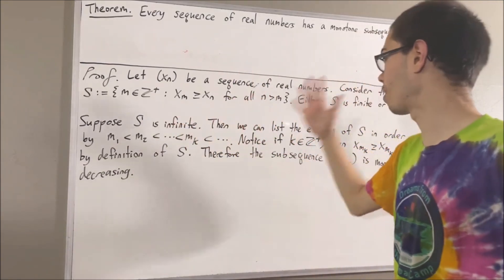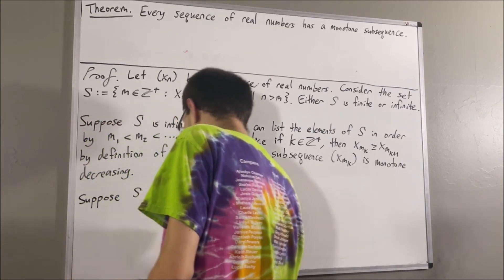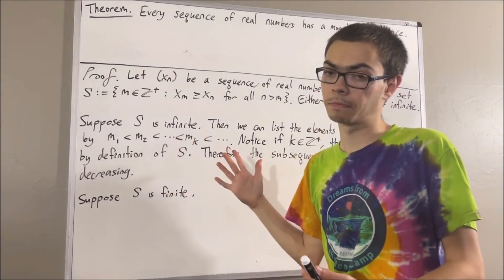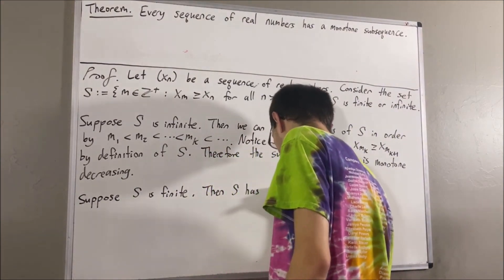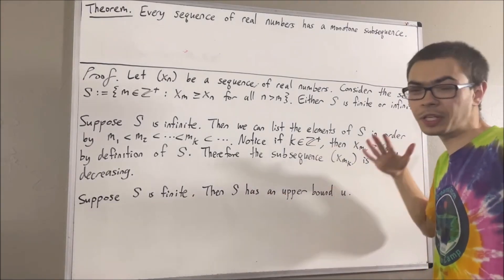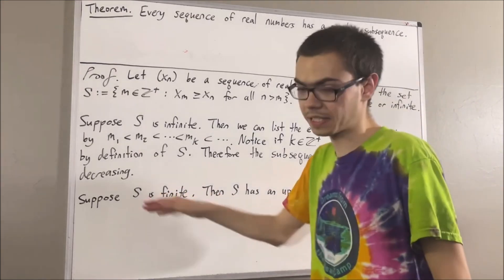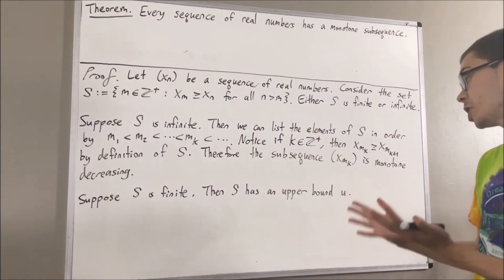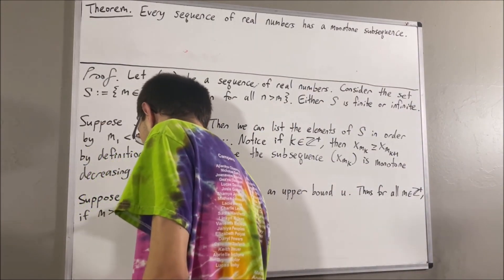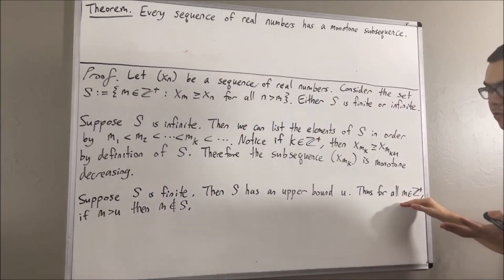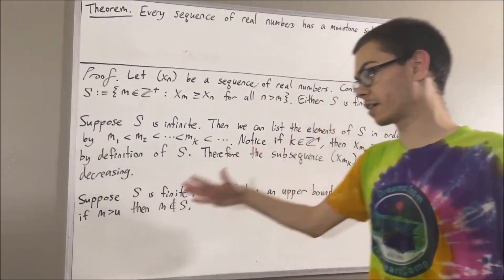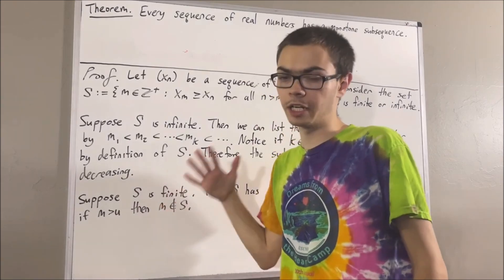Now let's consider the case where S is finite. Every finite set of real numbers has an upper bound, so S must have an upper bound — I'll call it u. Since u is an upper bound of S, everything bigger than u must not belong to S. So every positive integer bigger than u is not an element of S. For all positive integers m, if m is greater than u, then m is not an element of S.